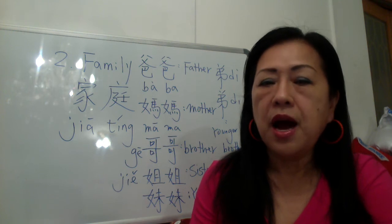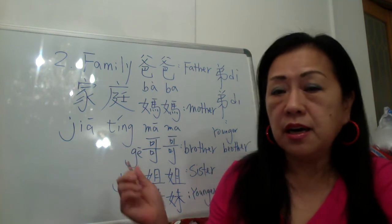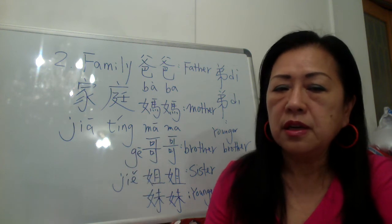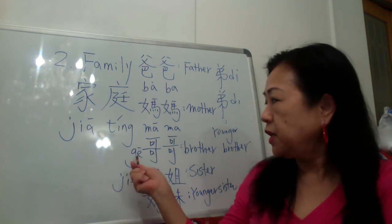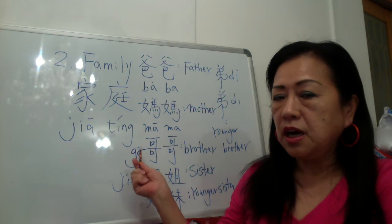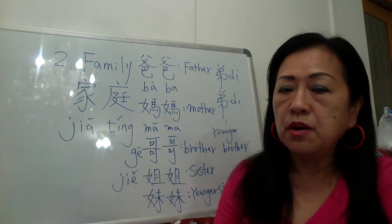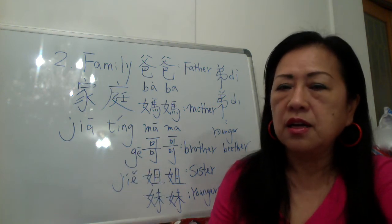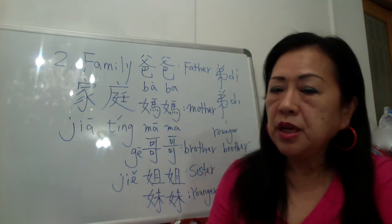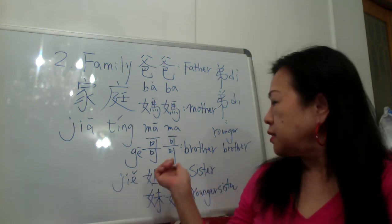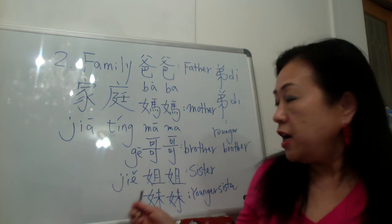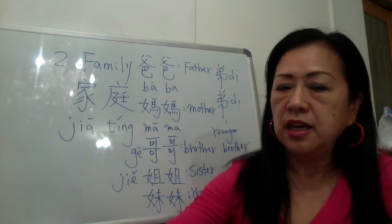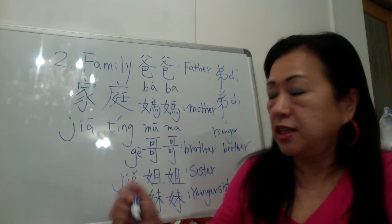妈妈，even 哥哥，哥哥 is the older brother. The pinyin is G-E, 哥哥. If the older sister, we say J-I-E, 姐，and the second syllable 姐姐 has no tone mark — that means fifth tone.